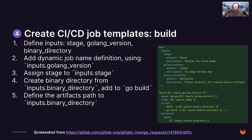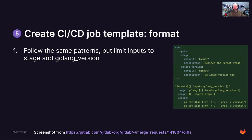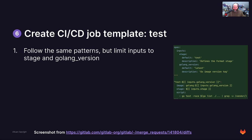Once the build template works, you can start testing the component or continue with migration of the other jobs. The format template inside the component follows the same pattern but limits inputs to stage and Golang version, and runs different commands — `go fmt` and `go vet`. The test job template in the component also follows the same pattern and just executes `go test -v`. It's repeating itself, but it's great to have all three available as separate encapsulated templates.